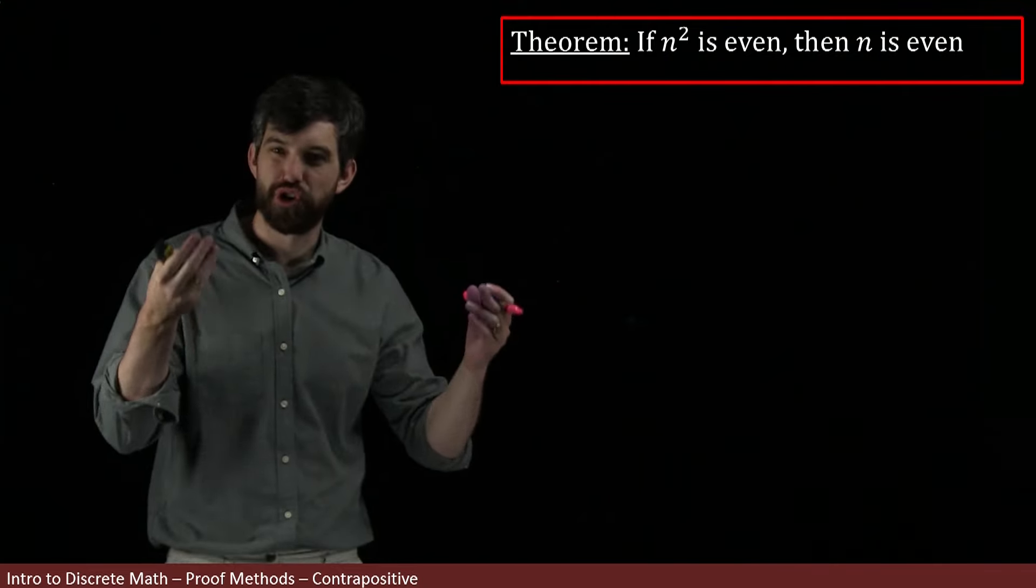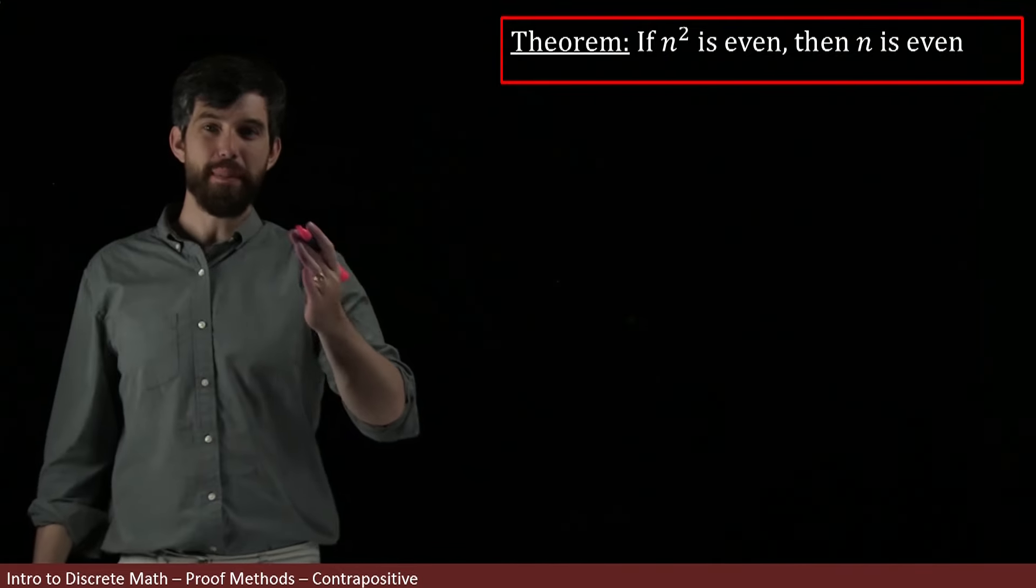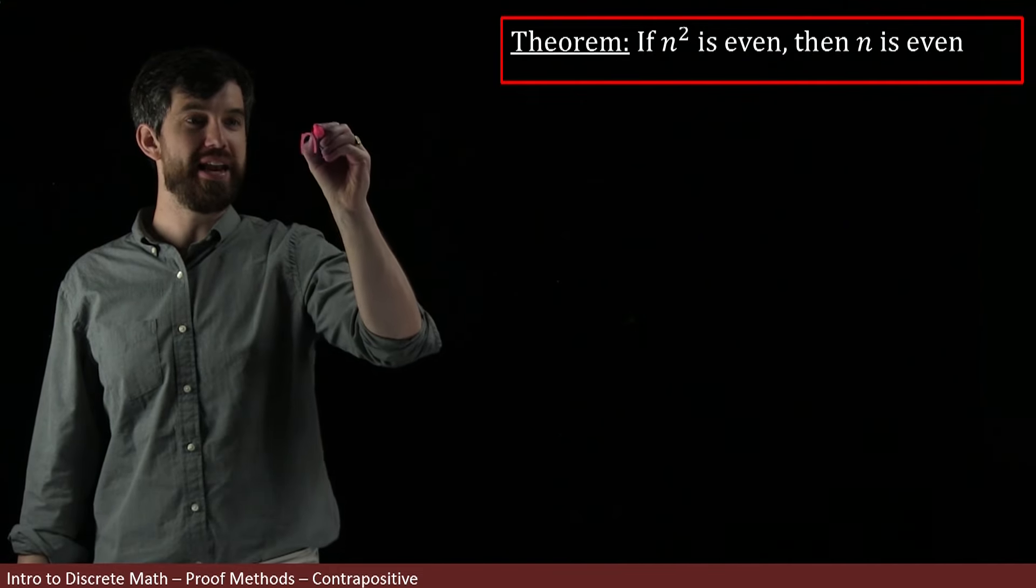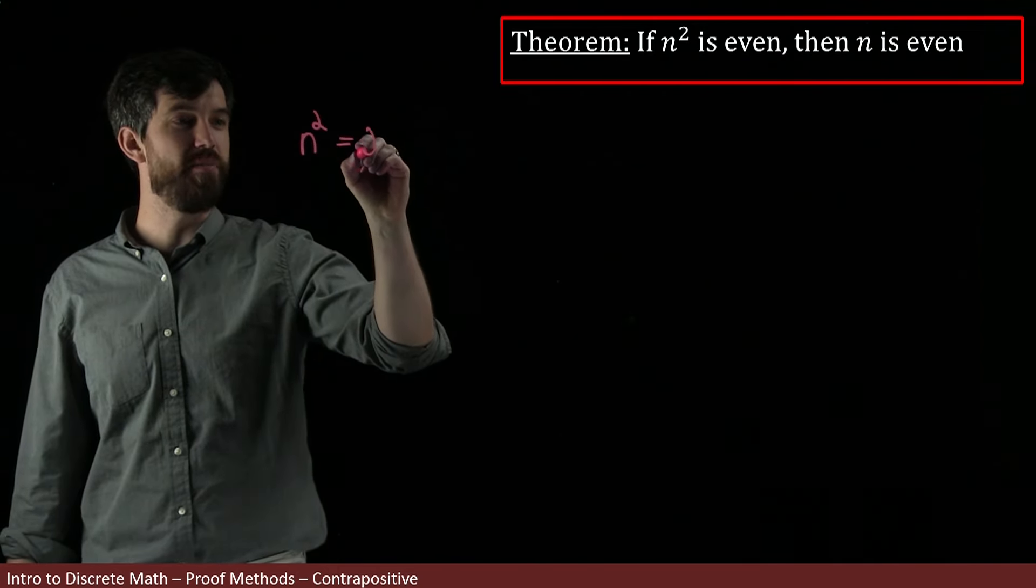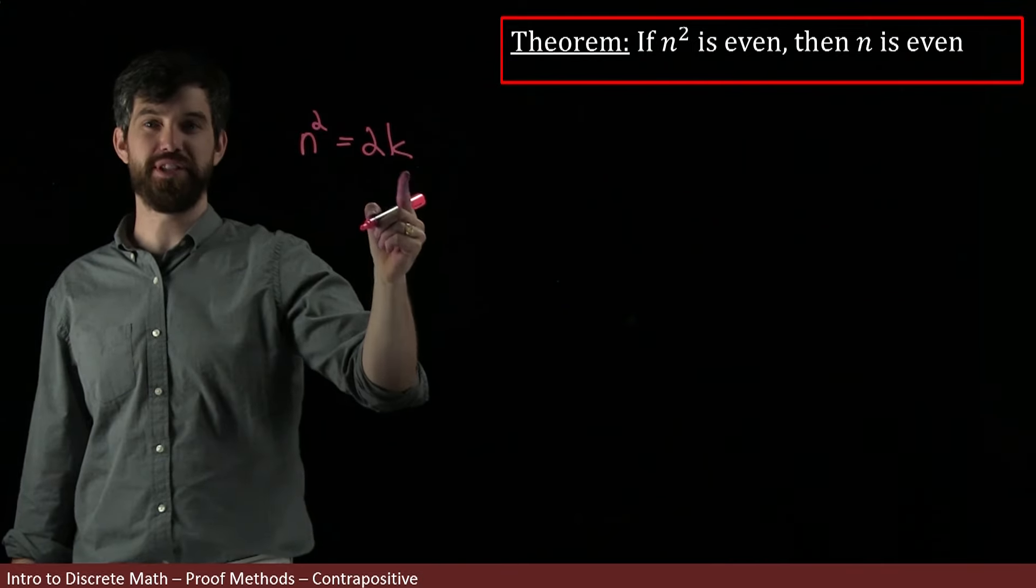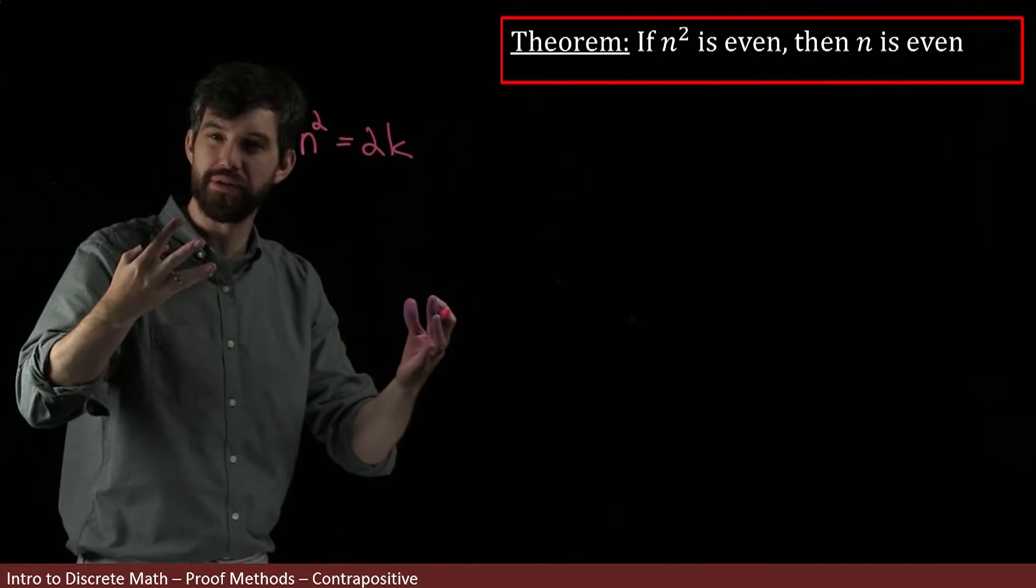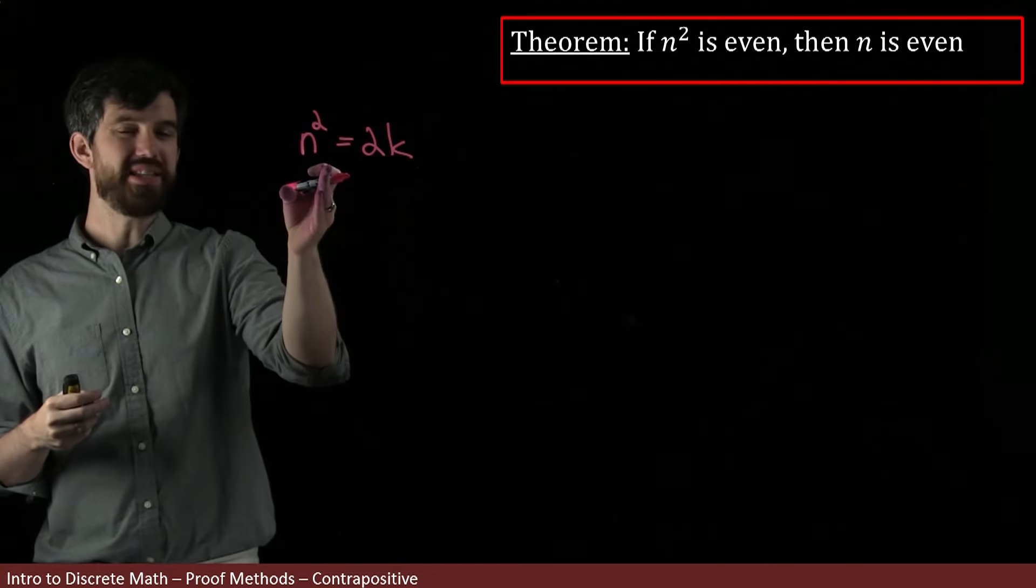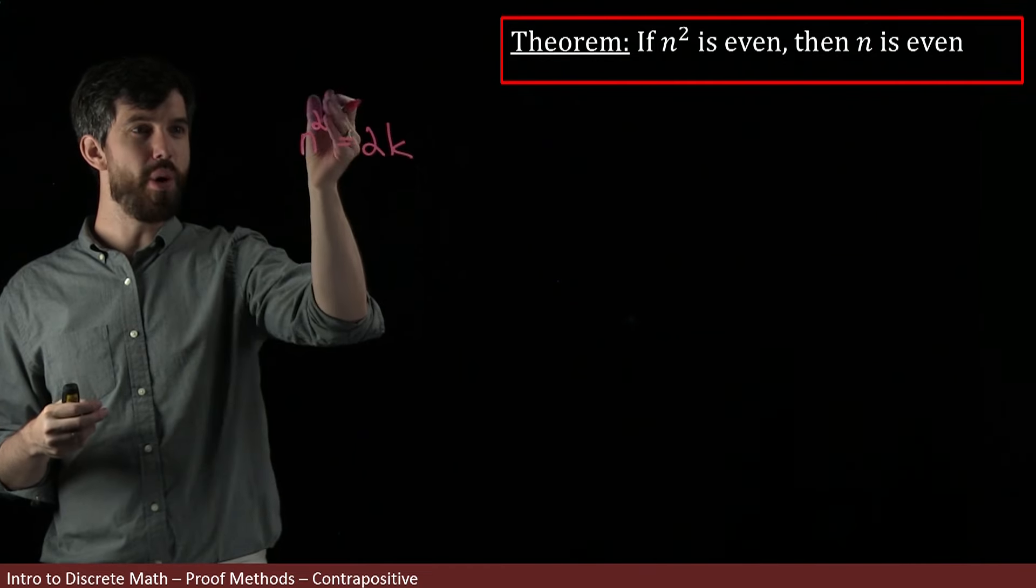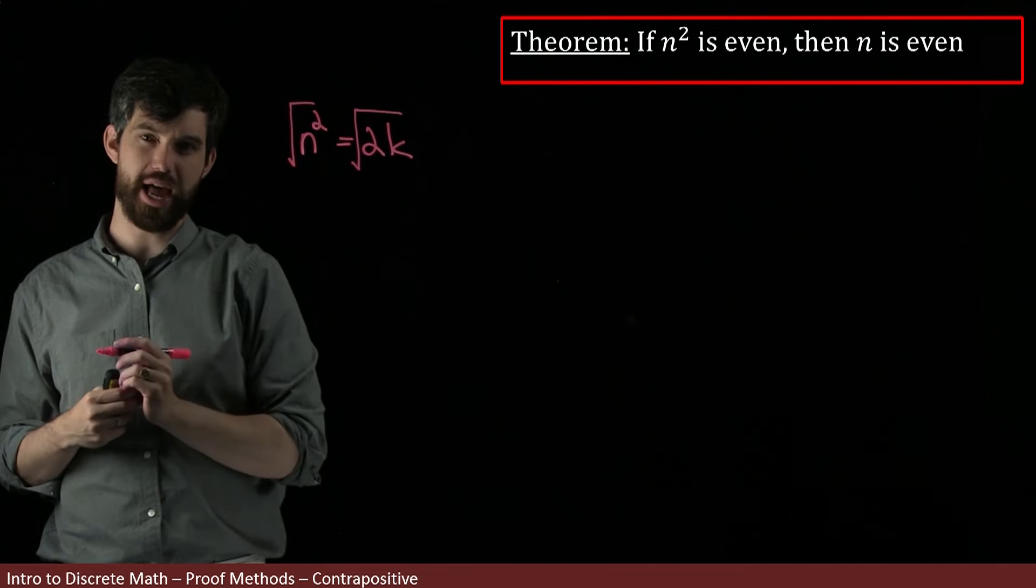I'm going to try to use a direct proof and show you why it might be challenging. So my assumption is that n² is even, which means n² equals 2k for some k. I'm not going to write all my symbols down because this is my playing around step - I don't have to be that precise. And I want to say something about n. I've got this square here.